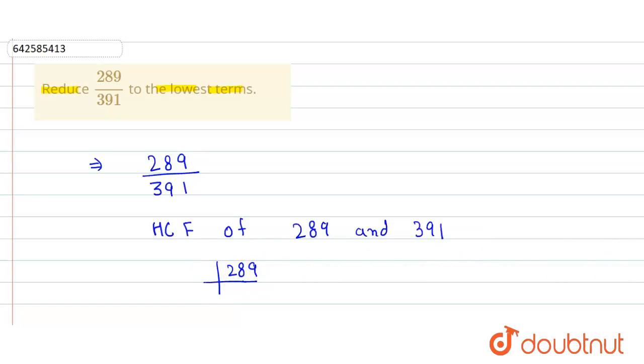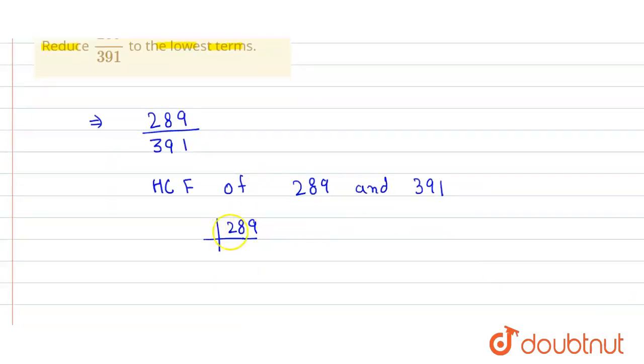So 289. Now we find out the factors of this number. We divide by 17 and get 17, then divide by 17 again and get 1. So 289 equals 17 times 17.